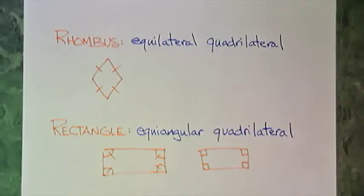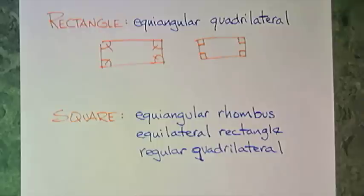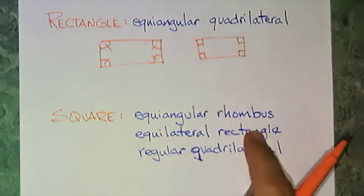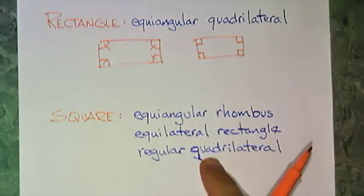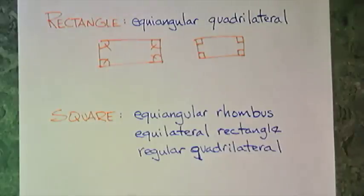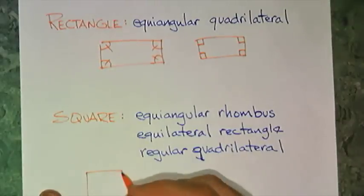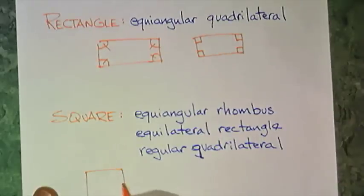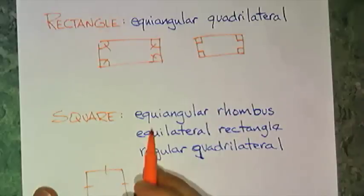And then finally, a square. I've got three definitions, two word definitions, for a square. And hopefully this makes it all so much easier for you. It's an equiangular rhombus, or an equilateral rectangle, or a regular quadrilateral. An equiangular. So we have, and we need to make marks on our shape. They all look the same. If it's a rhombus, all the sides must be the same. If it's equiangular, we mark all the angles the same.